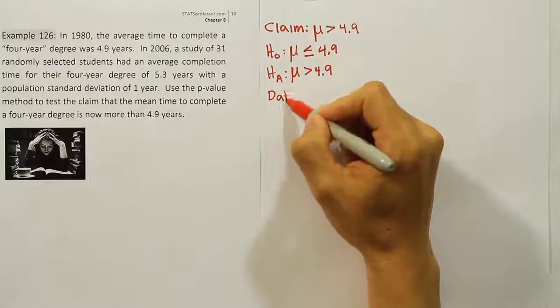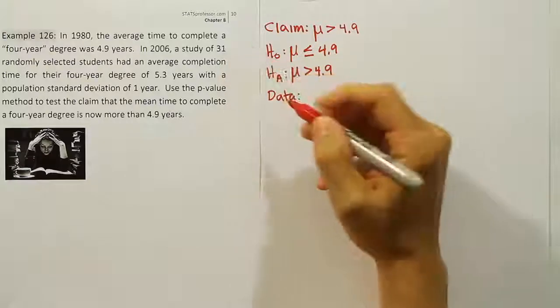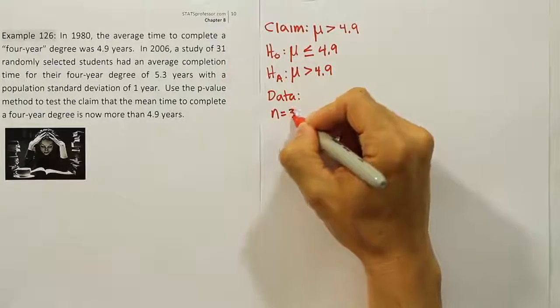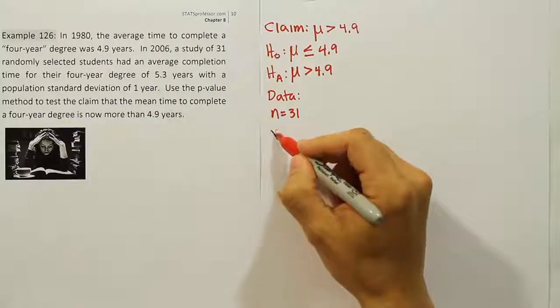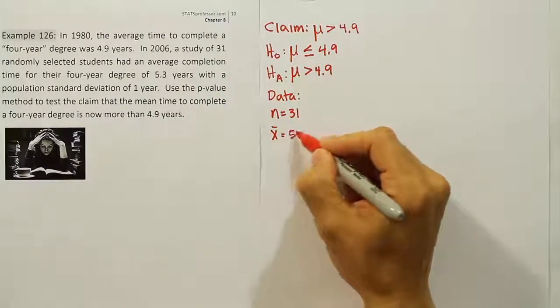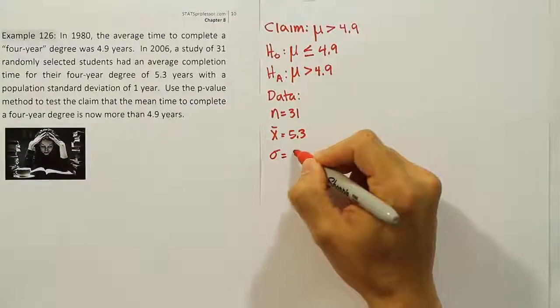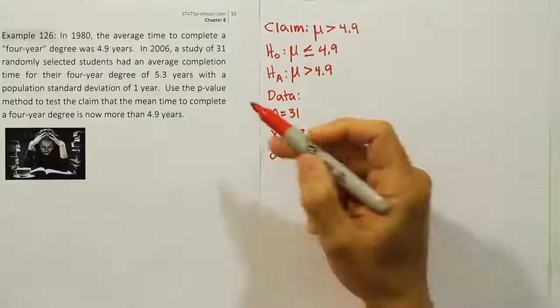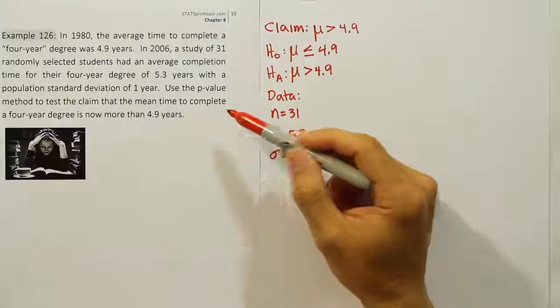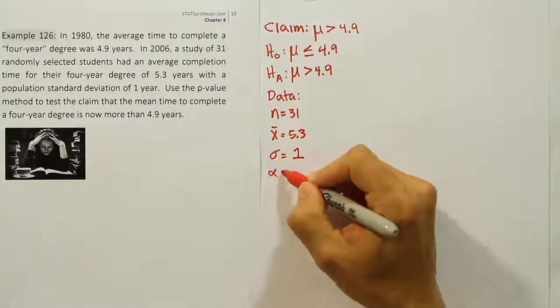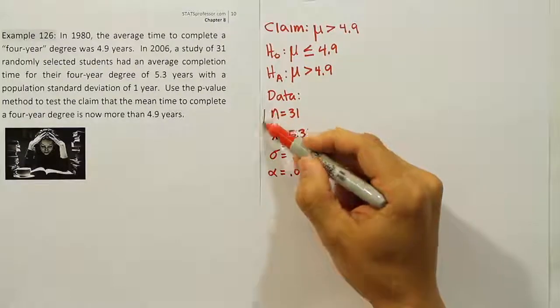Now let's collect the data for the problem. They tell us there are 31 subjects, so N is 31. They had an average completion time of 5.3 years with a population standard deviation of 1 year. They say use the p-value method to test the claim, and they don't give us any significance level. When it's not given, we assume a default case of alpha equals 0.05.